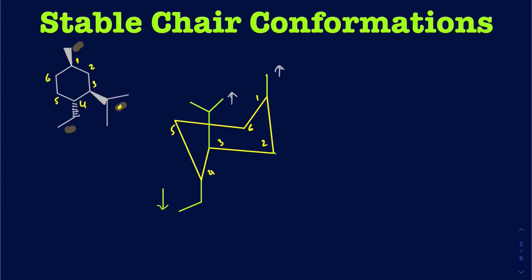So that's going to be your first conformation — and this is not going to be the most stable conformation. Before you make your decision, you always want to go ahead and draw the second conformation. So let's flip this, and when you flip it, the chair is going to look like this.